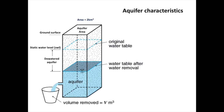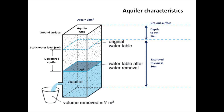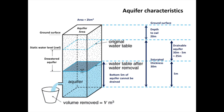The aquifer covers an area of 2 square kilometers, with a depth to the static water level of 20 meters. Below that we have a saturated aquifer with 30 meters of thickness, which means from the ground surface to the bottom of our aquifer is about 50 meters. We can never completely pump out all the groundwater, and the bottom 5 meters cannot be exploited, meaning 25 meters of the saturated thickness could be drained. It's very useful to make a sketch like this every time you make calculations.